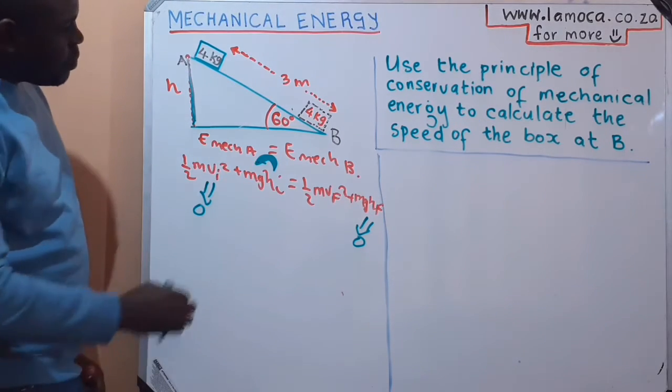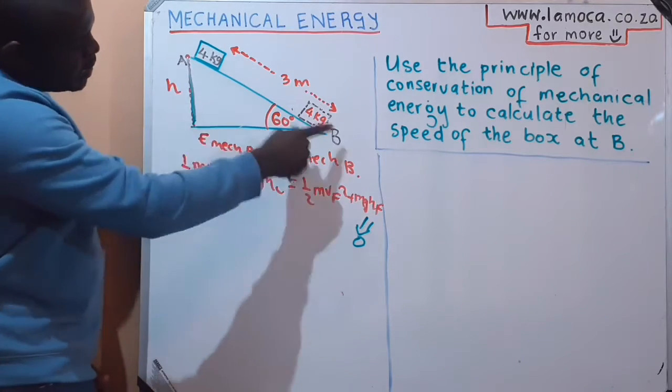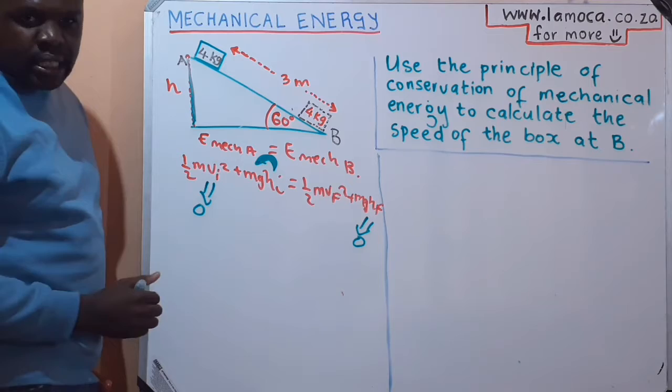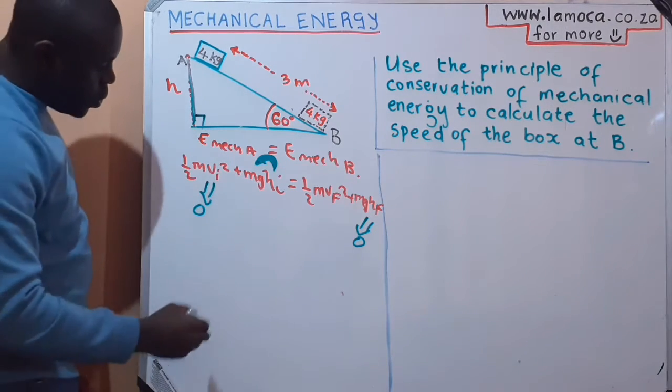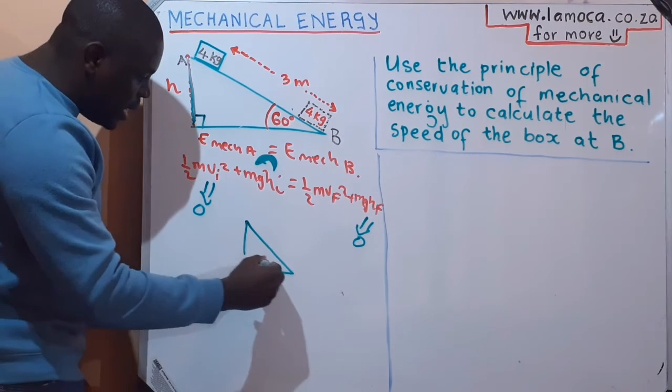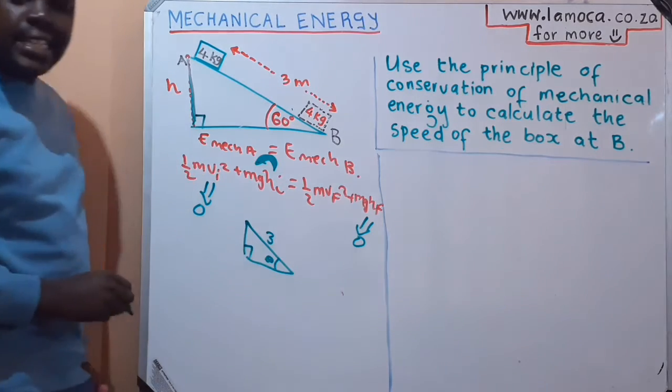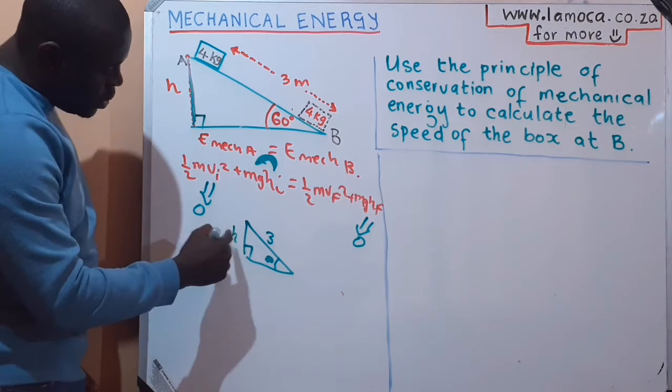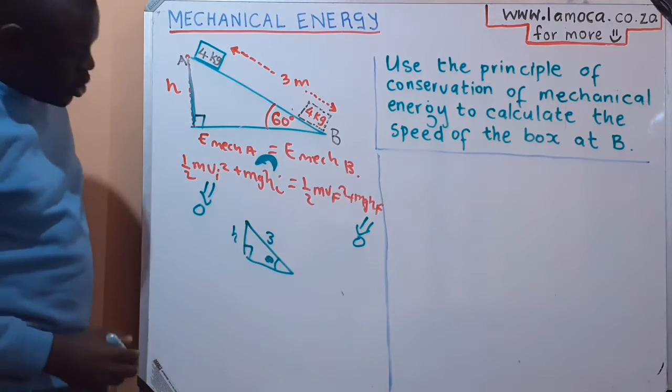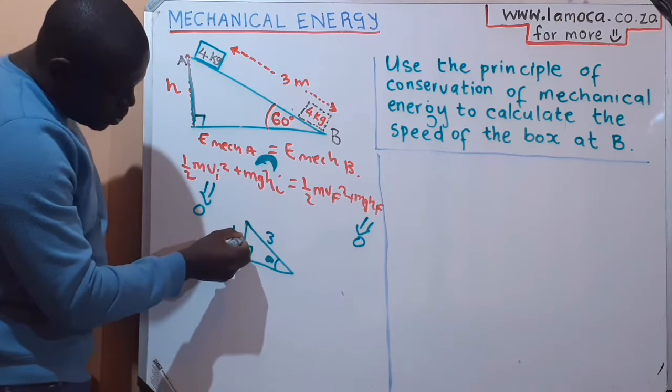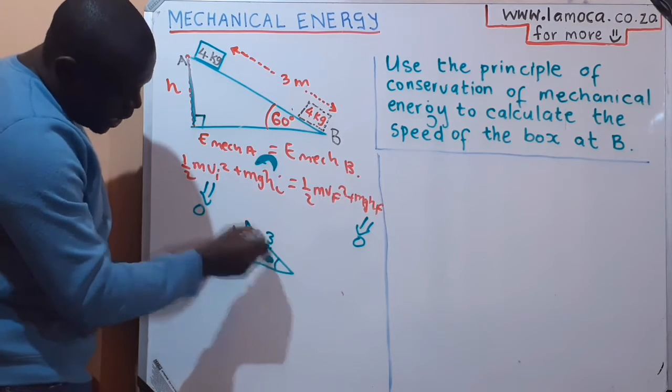We are given the angle of the slope, which is 60 degrees, and the distance of the slide. So we can apply our trig ratios to help us find how high is A from the ground. We are looking at a triangle that has 60 degrees, that has 3 meters there, and it's a right angled triangle. I'm looking for the height, which is opposite 60 degrees. And I know the hypotenuse.